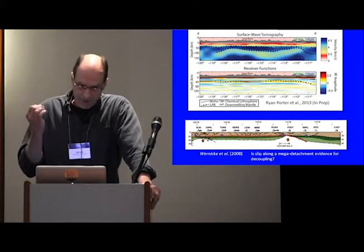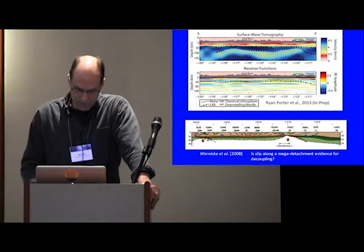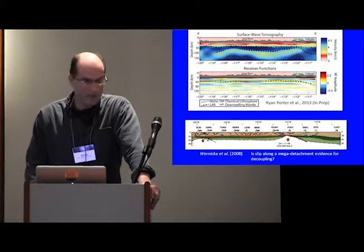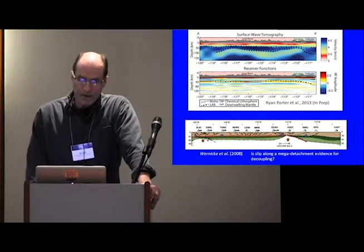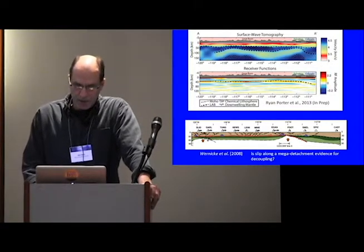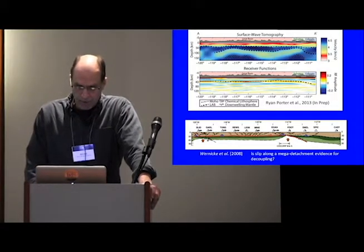Secondly, the fantastic lithospheric structure that's coming out, these models are coming out for western U.S. from receiver functions, giving us crustal thickness variations. That also is going to be vitally important in the next generation of dynamic models that explain what's going on in western North America.